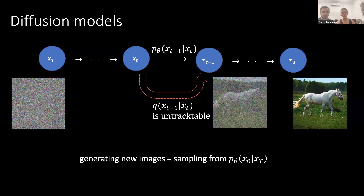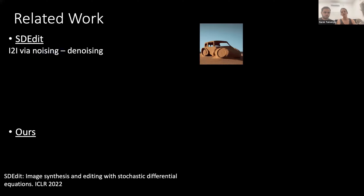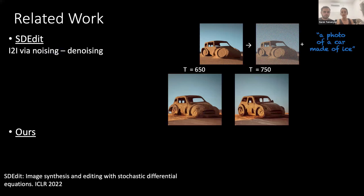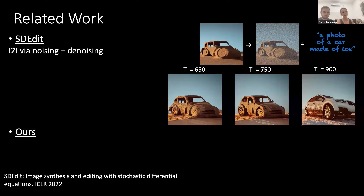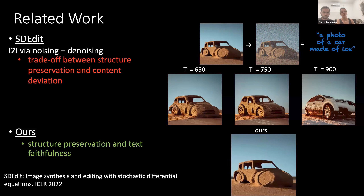Let's talk about some other works. A dominant method for controlling the generation was SDEdit. They propose to take a clean image as guidance for the layout and noise it to some intermediate time step, then sample with a new prompt from that time step on. For different noising levels you get different edits, but there is a very inherent trade-off between satisfying the target edit and preserving the layout. Our method solves this trade-off — we are able to both accurately preserve the structure and completely deviate in the low frequencies to fulfill the target edit, which is the main pitfall of SDEdit.